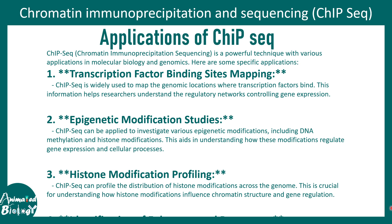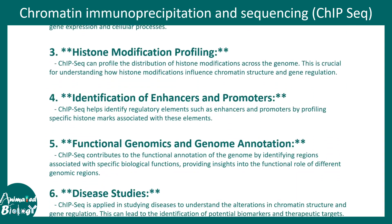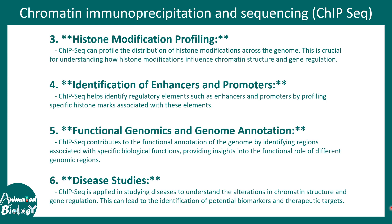Here are some applications of histone ChIP-seq, or ChIP-seq in general. ChIP-seq can detect transcription factor binding, epigenetic modification, and histone modification profiling as we have seen in this video. It can also be used for identifying enhancers and promoters, identifying specific genomic regions, and disease-related studies looking at which marks are associated with disease. These kinds of studies can be done using histone ChIP-seq or chromatin immunoprecipitation.